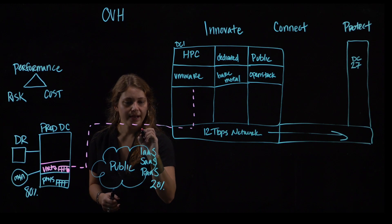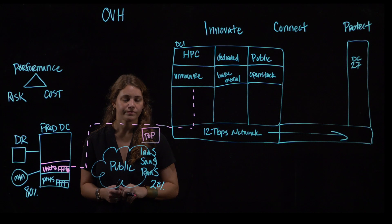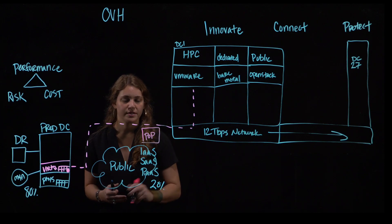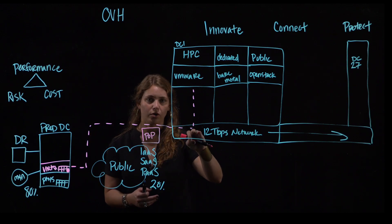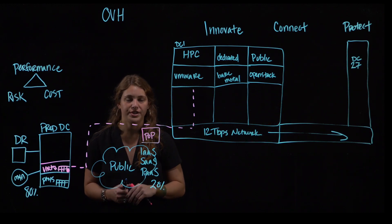Now within that network we have 33 points of presence globally today. For customers that need to leverage our points of presence, once you're on this point of presence or in this point of presence, you have the ability to on-ramp to our global backbone and leverage that across the globe within all of our data centers.